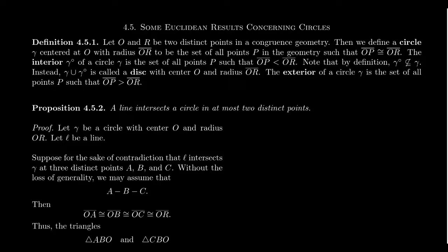So first and foremost, what is a circle in a congruence geometry? Remember, a congruence geometry is a geometry that satisfies the four axioms of incidence, the four axioms of betweenness, and the six axioms of congruence. Suppose we have two distinct points in a congruence geometry, called one O, called the other one R. Then we define the circle, which we'll often denote by Greek letters like gamma in this situation. We define the circle centered at the point O, and with the radius OR, to be the set of all points P in the geometry, such that OP is congruent to OR.